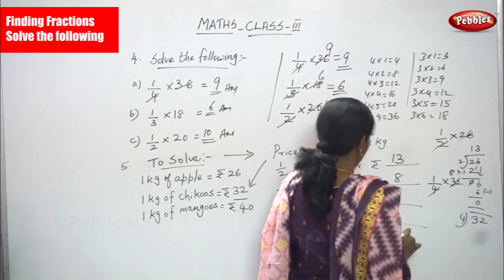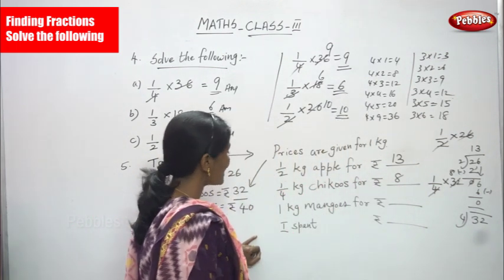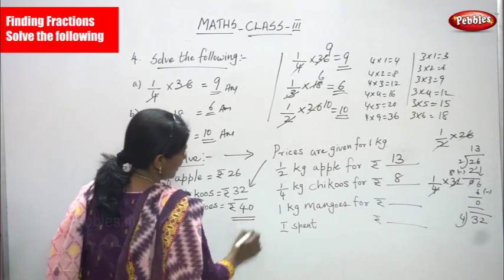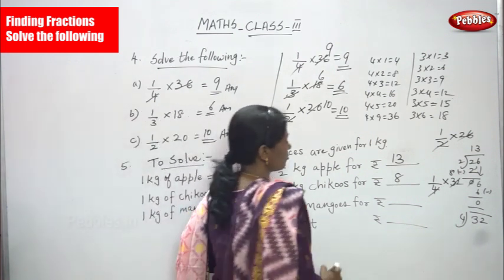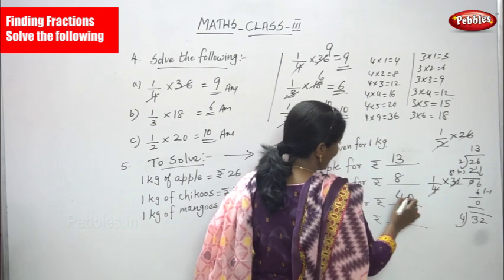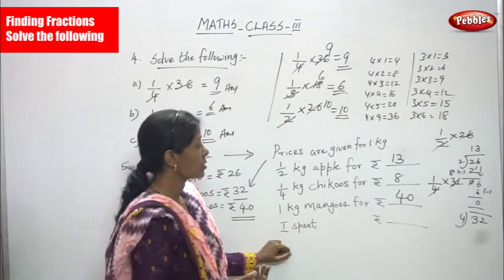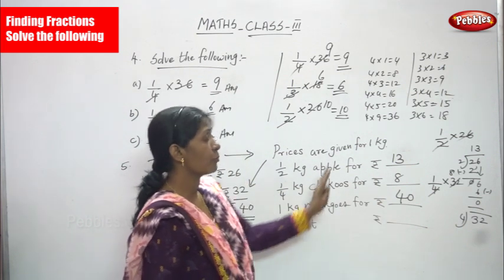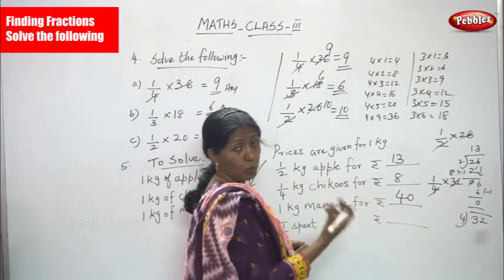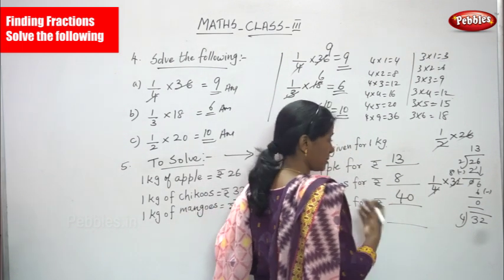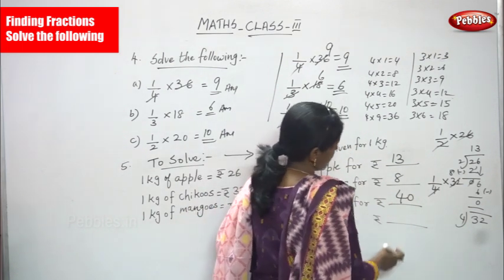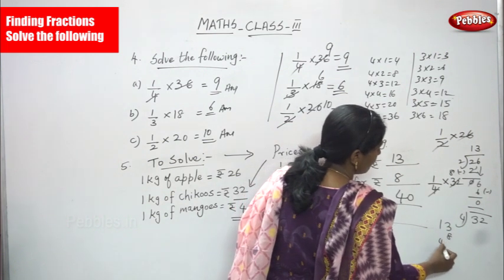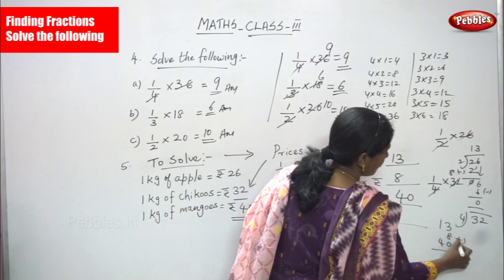Next, 1 kg of mangoes is rupees 40. Since they asked for 1 kg, you write the amount as it is: 40. Now to find the total amount spent, add everything: 13 + 8 + 40.